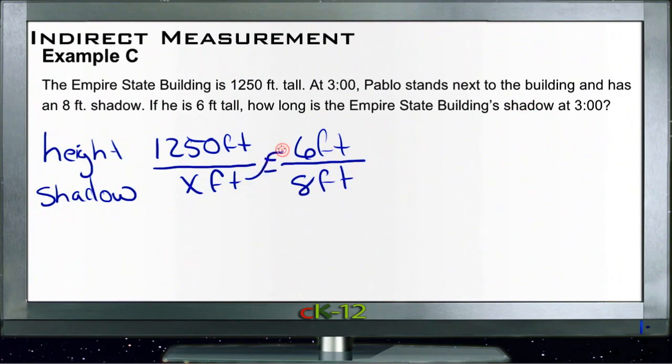Again, we'll cross-multiply. 6 times x is 6x. 6x equals 1,250 times 8. 8 times 1,250 is 10,000. So then we divide both sides by 6.